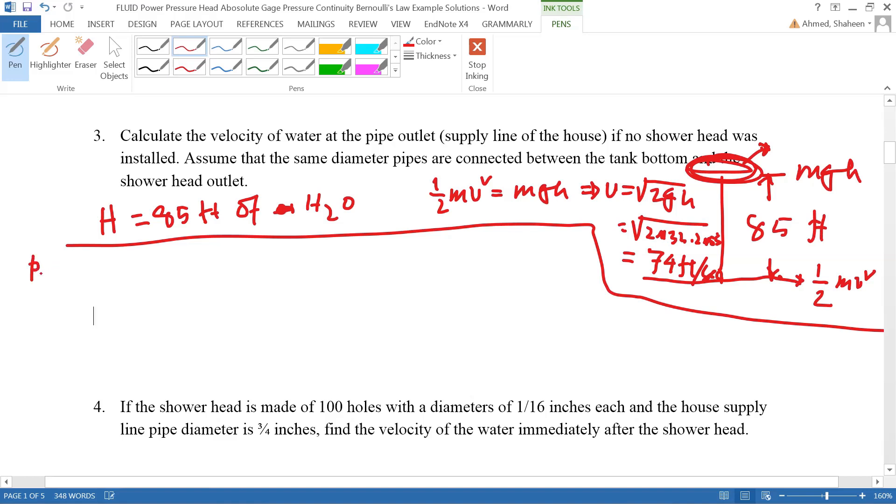So pressure head at point 1 divided by gamma, P by gamma is the pressure at point 1. Velocity head at point 1, v squared by 2g, plus elevation head at point 1, minus all the losses, head losses, and then anything left will be available at point 2 in terms of pressure head, velocity head, and elevation head.